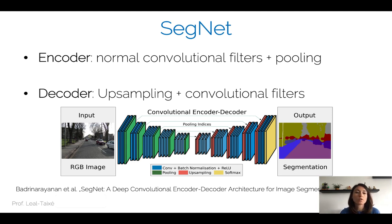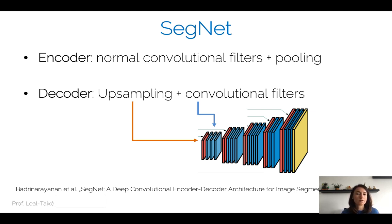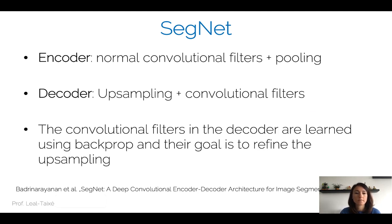SegNet is composed of two parts: the encoder with normal convolutional filters plus pooling that reduce the spatial size, and the decoder with upsampling plus convolutional filters. The decoder has not only upsampling but also convolutional filters after it. The intuition is that we do a rough upsampling of our feature map and then have a chance to correct it through a series of convolutional layers trained with backpropagation — regular convolutional filters whose goal is to refine the upsampling.